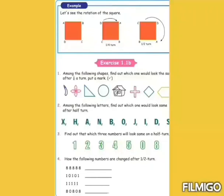Third question, find out which three numbers will look same after half turn: zero, eight. Fourth question, how the following numbers are changed after 1 by 2 turn? Answer: all numbers will come the same number after half turn.